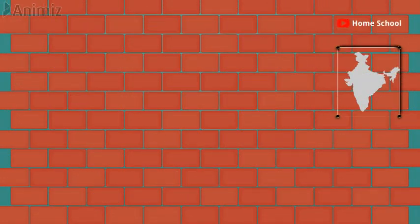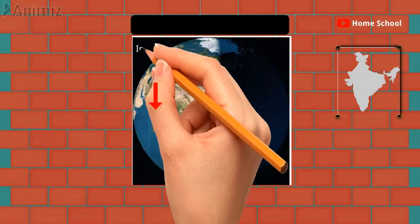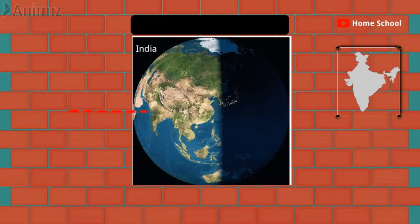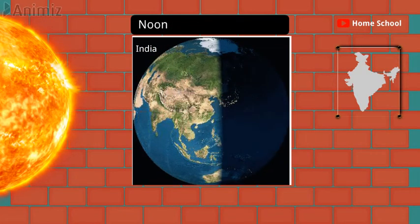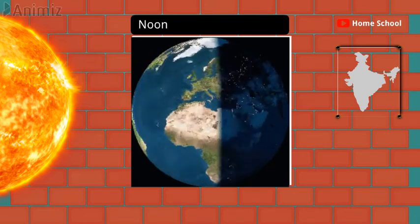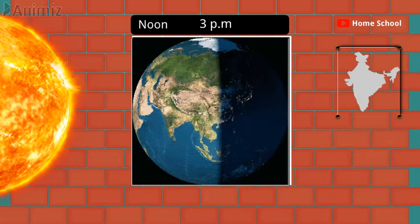Now let's know about it more closely. As you can see here, this is India and now it is directly facing the Sun, and so it is having noon here. But as India keeps moving along with the Earth, it reaches at this place after some time and is having around 3 p.m.